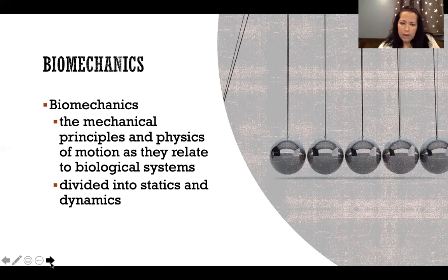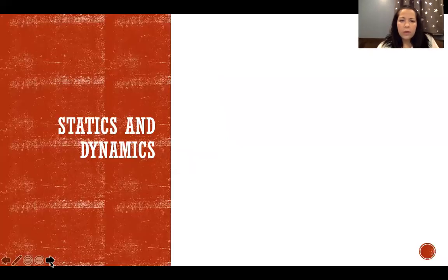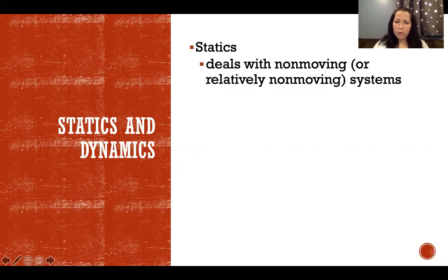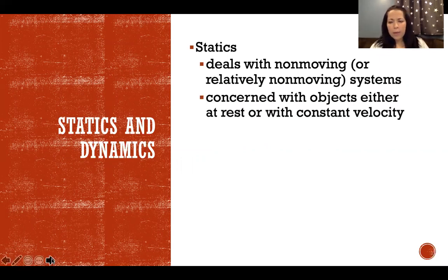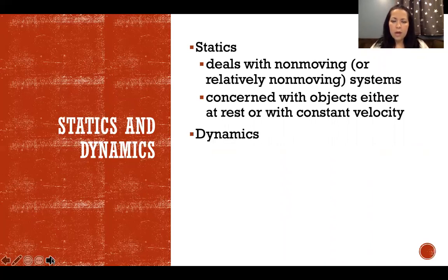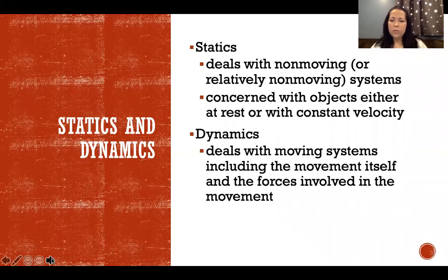We divide biomechanics into statics and dynamics. Statics deals with non-moving or relatively non-moving systems. In biomechanics, it refers to things that are stationary, not moving, or not changing in the nature of their movement — so if they have a constant velocity, meaning constant speed and direction that's not changing, we would still consider that statics.